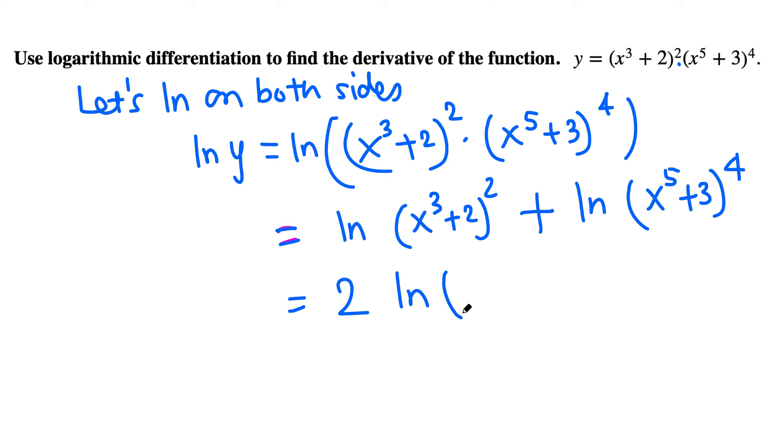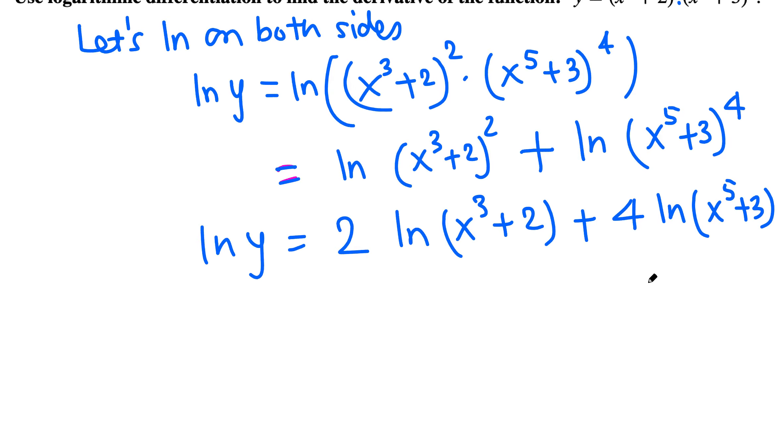This is 2 ln(x³ + 2) plus 4 ln(x⁵ + 3). So far, we are just manipulating using natural log—we haven't used any calculus. Now we are ready to take the derivatives of both sides.